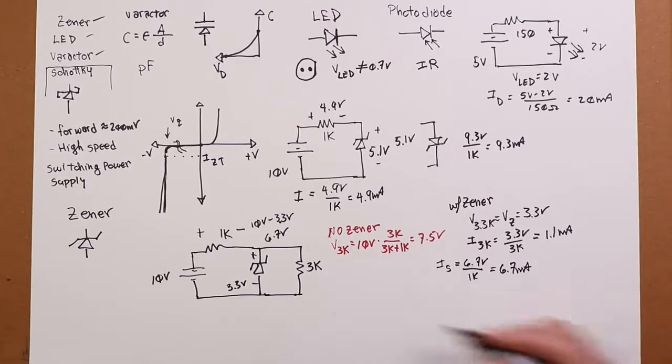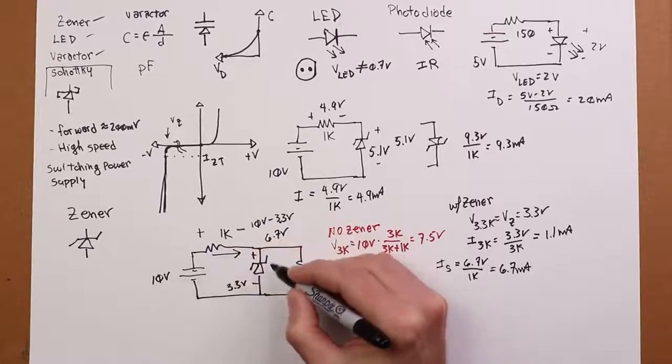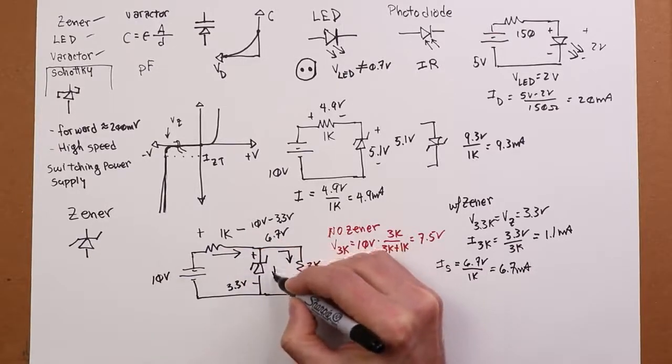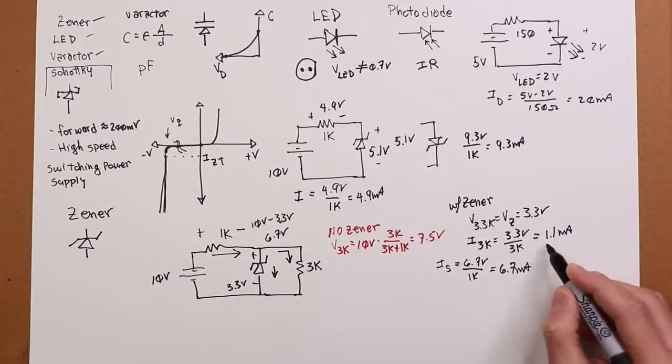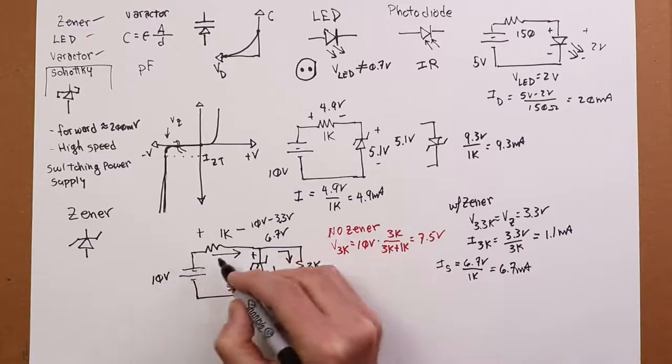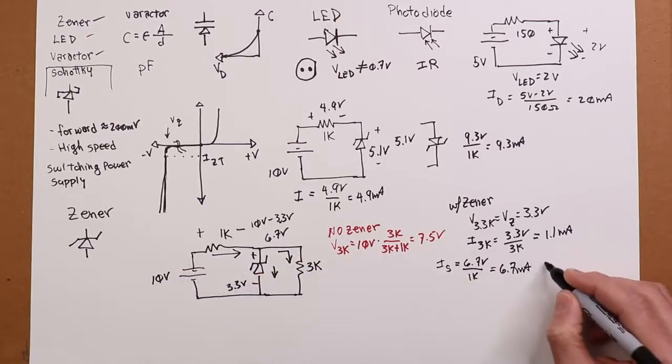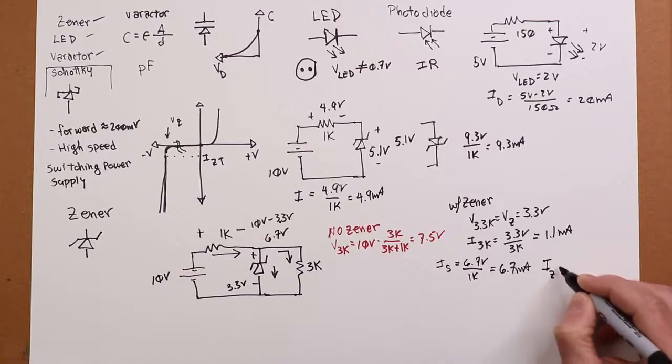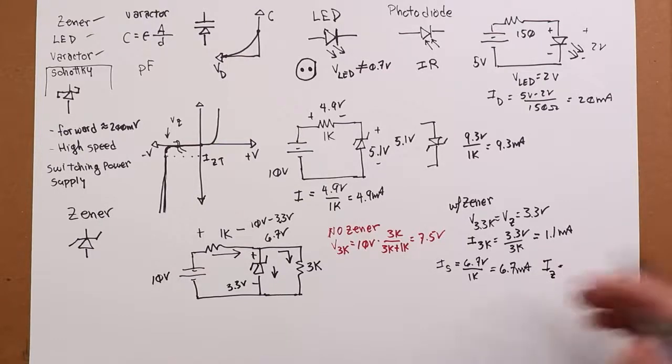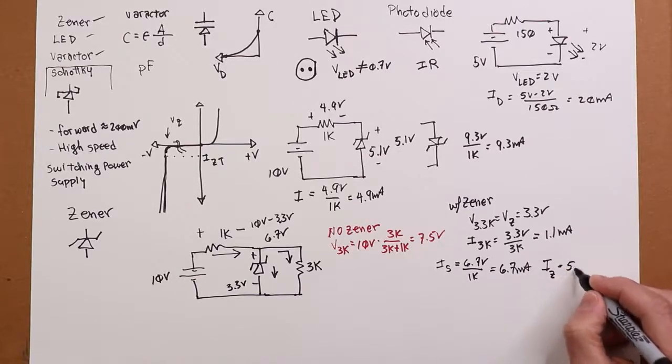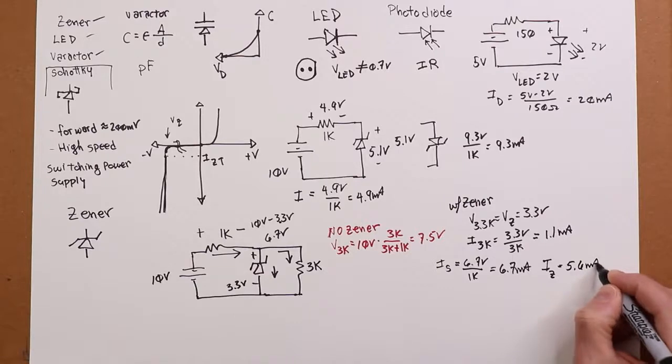Now remember, Kirchhoff's current law. That's what's coming in. Those are the two currents exiting. So there's 1.1 going this way, 6.7 coming in. It must be the case that the Zener is getting the difference. It's absorbing the difference. 6.7 minus 1.1. In other words, 5.6 mils.